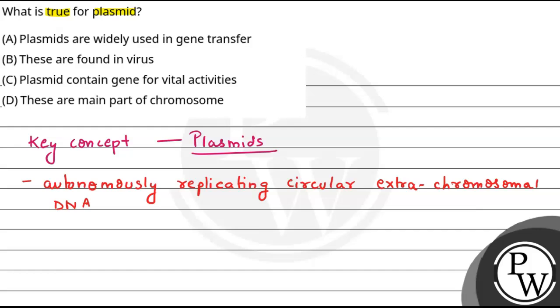Now discussing the options, the first option is that they are widely used in gene transfer. We know that plasmids are small as well as circular DNA molecules that are separated from the chromosomal DNA.